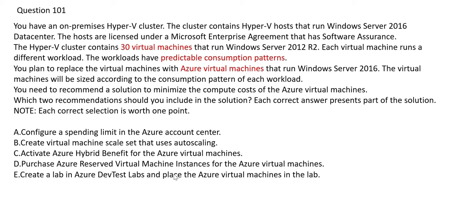Remember, you need to identify two recommendations — two answers. Option A suggests configuring a spending limit in the account center. But what happens if the spending limit is crossed? A spending limit is not a way of minimizing compute costs; it is a way of controlling them.